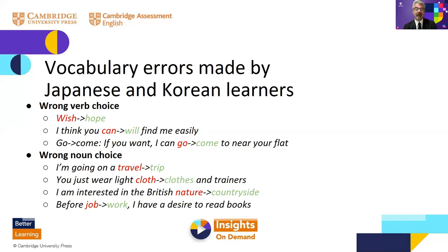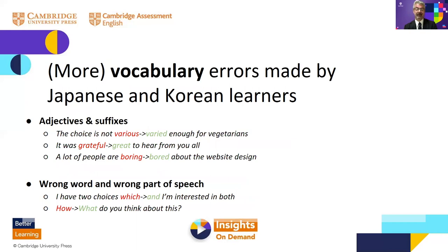Another common mistake is noun choice. Sometimes words look similar on the surface, such as 'travel' and 'trip', or 'cloth' and 'clothes.' Sometimes words seem to be synonyms but aren't quite — such as 'nature' and 'countryside' or 'job' and 'work.' There are also a number of false friends or loan words that have come from English into Japanese and Korean and now have their own meaning. For example, 'claim' in Japanese means 'complaint', and 'consent' is used for the electrical socket in the wall.